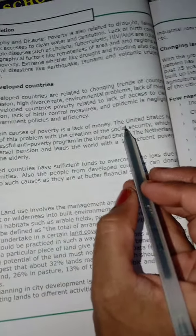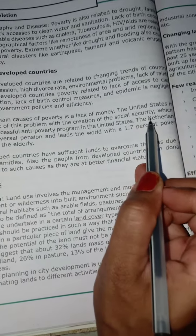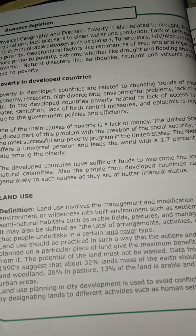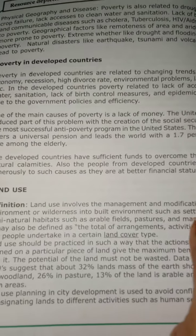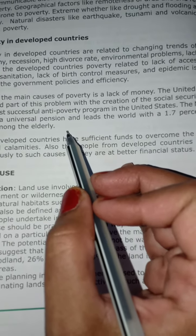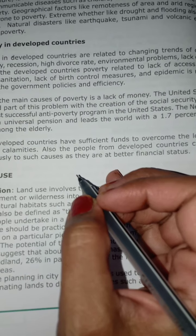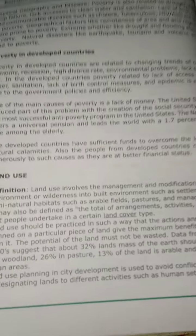One of the main causes of poverty is lack of money. The United States has reduced this problem with the creation of social security. Urban poverty means no social security scheme, but the US has provided universal pension so that even after people lose their jobs or retire, they will get money and won't suffer from economic disparity or poverty.